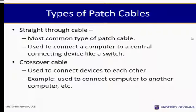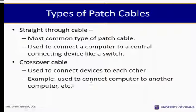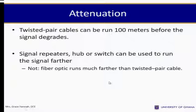Types of patch cables include the straight-through cable, the most common type, used to connect a computer to a central connecting device like a switch. The crossover cable is used to connect devices to each other, for example a computer to another computer. Attenuation: twisted pair cable can be run 100 meters before the signal degrades; a hub or switch can be used as a signal repeater to run the signal further. Note that fiber optics run much faster than twisted pair cable.